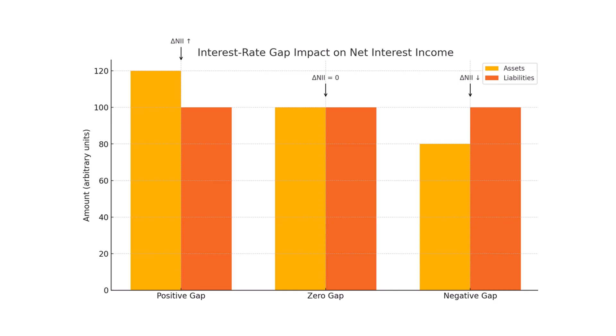If we look at the left-hand side of our chart where we see a positive gap — by positive gap what we mean is that more assets are going to reprice over this time period than liabilities — so if we have rising interest rates and more assets that are going to reprice, those assets are going to reprice to the higher interest rate, which means our change in net interest income will be positive, because our assets are going to start making us more money.